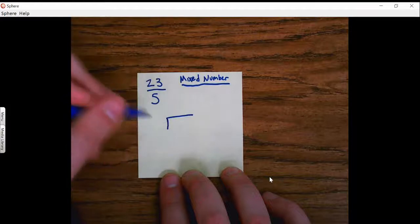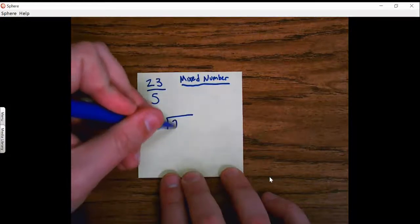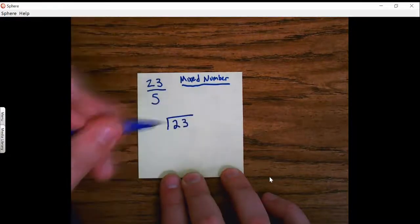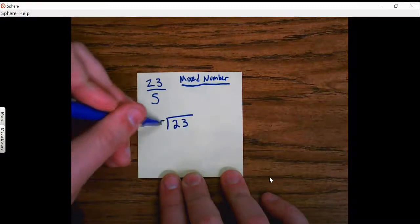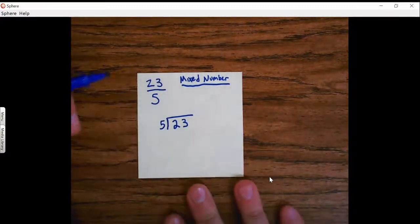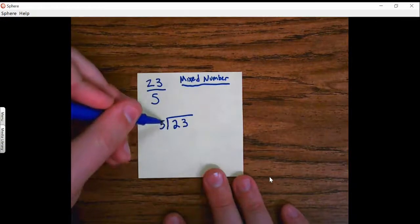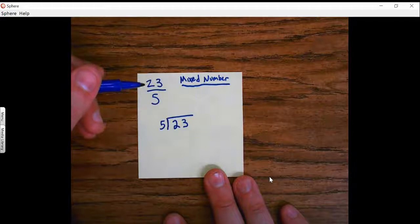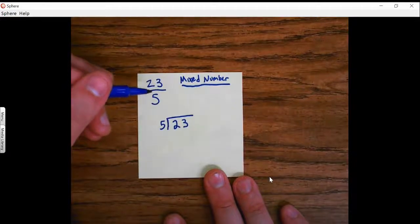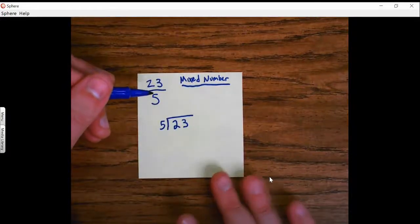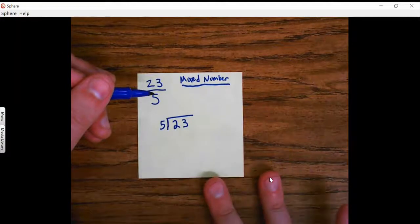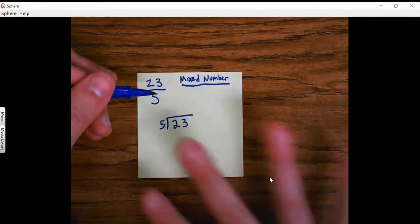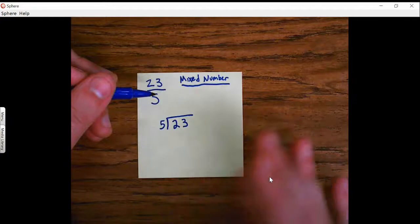So I want to do 23 divided by 5. 5 can't go into 2, so I want to think how many times can I take 5 out of 23? And if I'm counting by 5s: 5, 10, 15, 20, 25. Oh, 5 groups of 5, which would be 25, is too far.